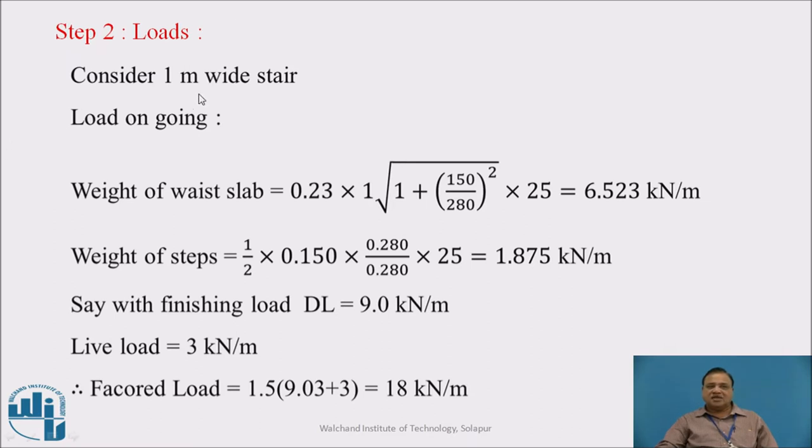Step 2: Loads considering 1 meter wide. Weight of waist slab is 0.23 times square root of 1 plus r by t square times 25, which is 6.523 kilonewton per meter. Weight of steps is half of r into t divided by t times 25, giving 1.875 kilonewton per meter. Including finishing load, it is 9 kilonewton per meter. Live load is 3 kilonewton per meter. So factored load is 1.5 times dead load plus live load, which is 18 kilonewton per meter.